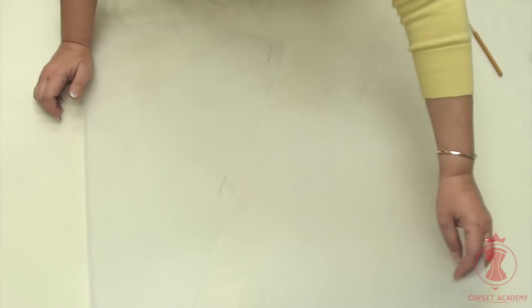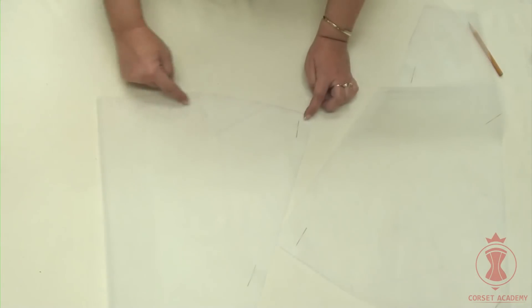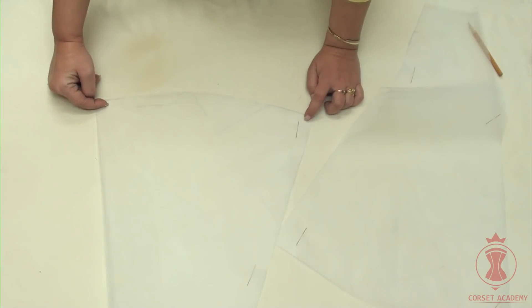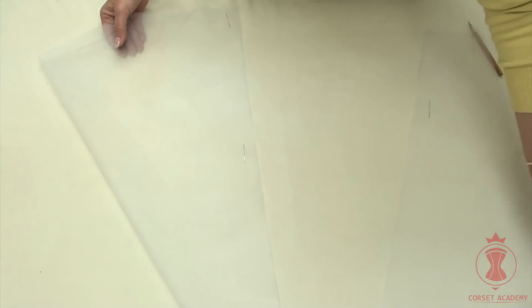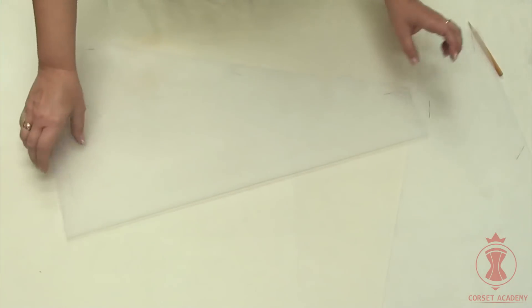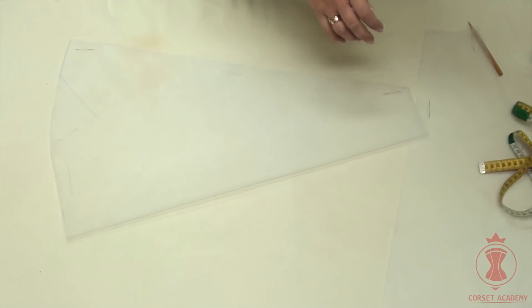The bottom circumference of my petticoat will be 150 centimeters. I divide the waist circumference and the bottom circumference in four. As the result, the trapeze shaped piece has a width of 10 centimeters at the top and about 38 centimeters at the bottom, seam allowances included.